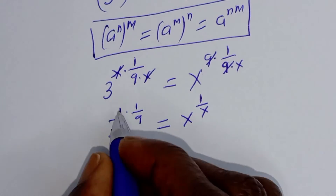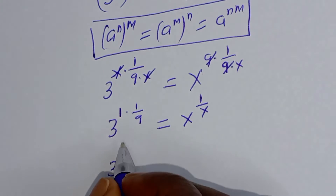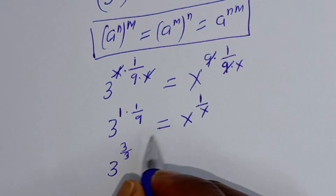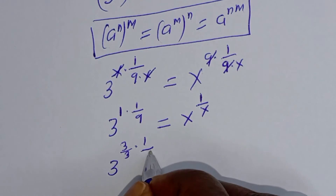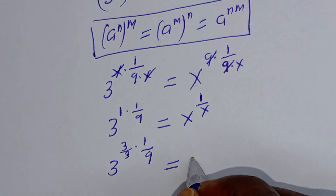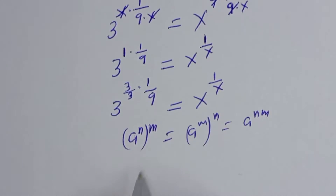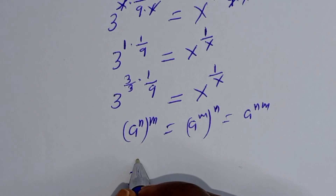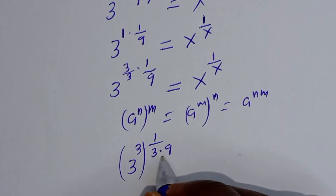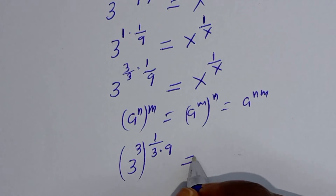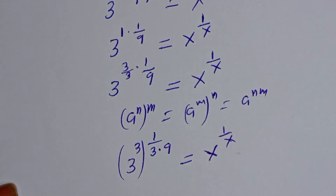Now let's perform a trick here. This can be written as 3 raised to power 1, which is the same as 3 over 3, giving 1 multiplied by 1 over 9 is equal to x raised to power 1 over x. So this becomes 3 raised to power 3, to the power of 1 over 3 multiplied by 9, is equal to s raised to power 1 over x.